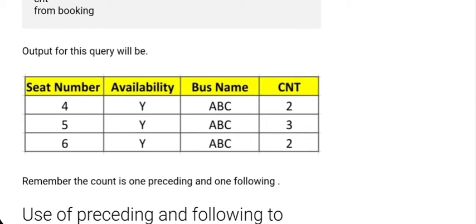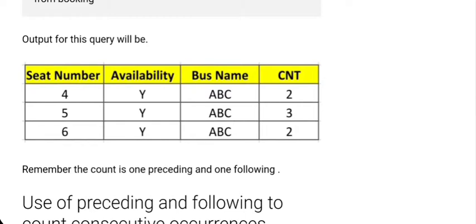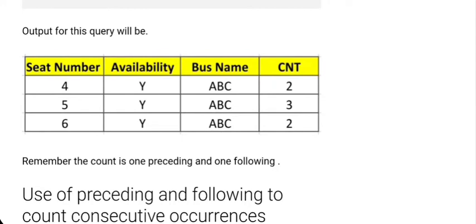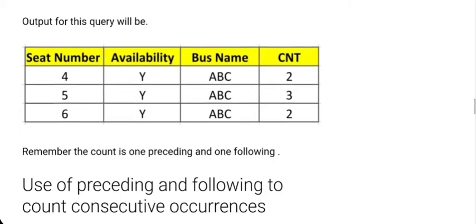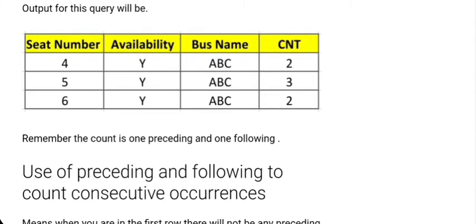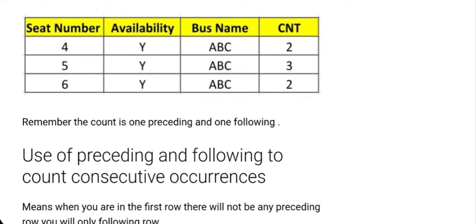If you closely observe the output table — seat number, availability, bus name, and count — how is the count calculated? Row 1 has count 2, row 2 has count 3, and row 3 has count 2. For the first row, there is no preceding row but there is a following row, so count is 2. For the last row, there is a preceding row but no following row, so count is 2. For the middle row, there is both a preceding and a following row, so count is 3.